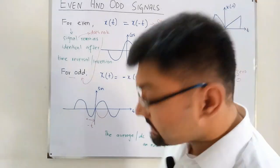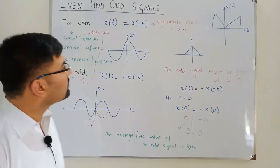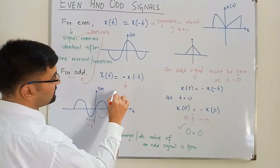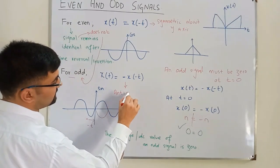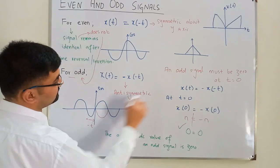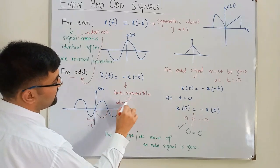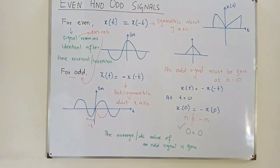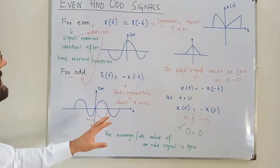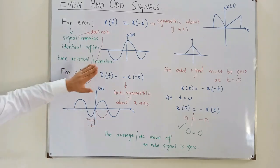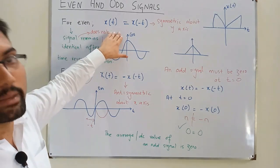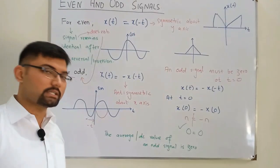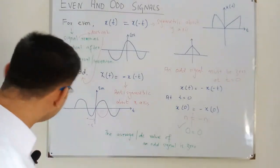To summarize: an even signal is symmetric about the y-axis. An odd signal is anti-symmetric about the y-axis, meaning it becomes symmetric when multiplied by negative one. For an even signal, after time reversal the signal remains the same. For an odd signal, after time reversal the signal is also amplitude reversed.